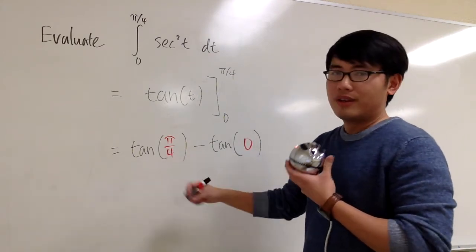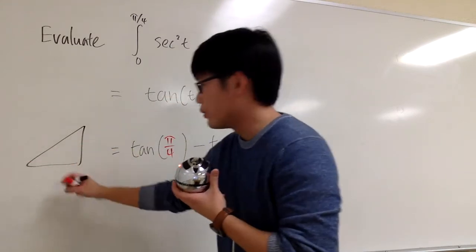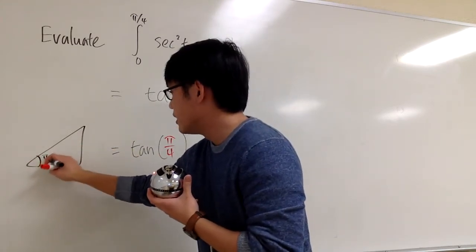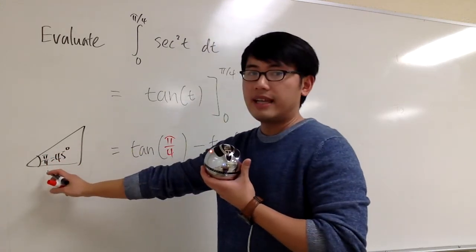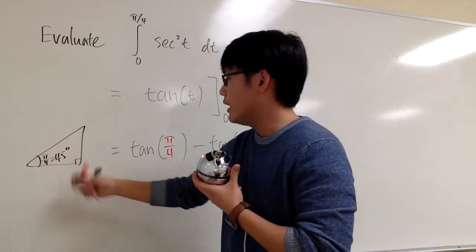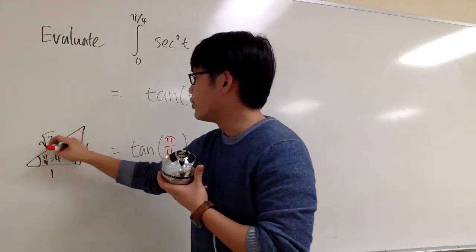What's tangent of pi over 4? Let me show you real quick. Pi over 4 is 45 degrees. Let's look at this as the angle in a right triangle, and we have a special right triangle, which has 1, 1, and square root of 2.